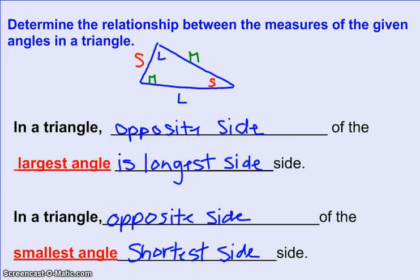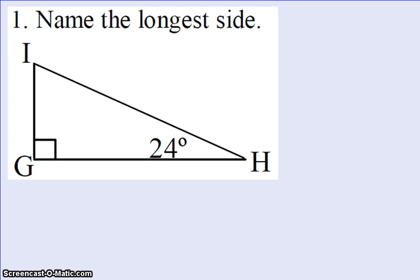So let's try some questions using this information. Here I have triangle IGH, and we want to name the longest side. I know that in my triangle, all the angles have to add up to be 180 degrees. So if I do 90 plus 24, I have 114. And then if I do 180 minus 114, that gives me 66.